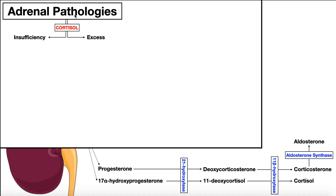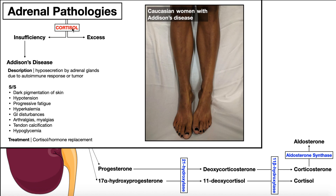The two adrenal pathologies have to do with either an insufficiency or an excess of the hormone cortisol, so we're mainly thinking about the zona fasciculata. The first is called Addison's disease — Addison's disease is the insufficiency. The way I remember that is: if something's insufficient, it's more absent — Absent A, Addison's A. Addison's disease is specifically a hyposecretion by the adrenal cortex, not the medulla, due to an autoimmune disease or a tumor.